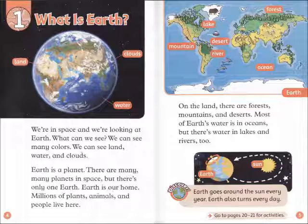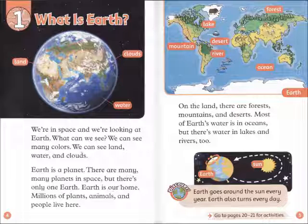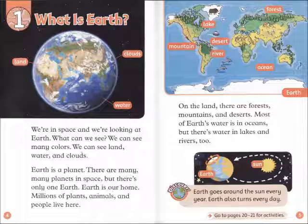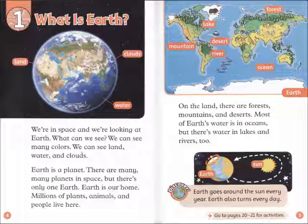Millions of plants, animals, and people live here. On the land, there are forests, mountains, and deserts. Most of Earth's water is in oceans, but there's water in lakes and rivers too. Discover: Earth goes around the sun every year. Earth also turns every day.